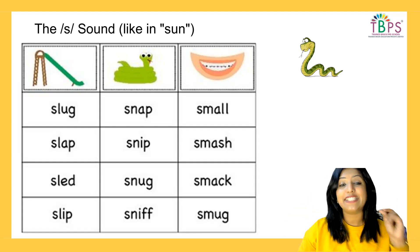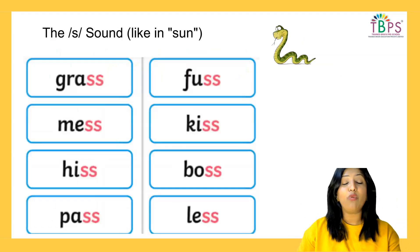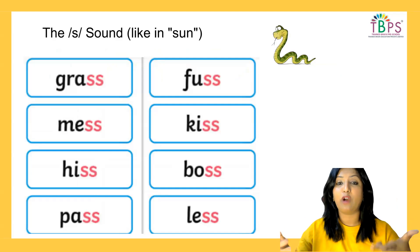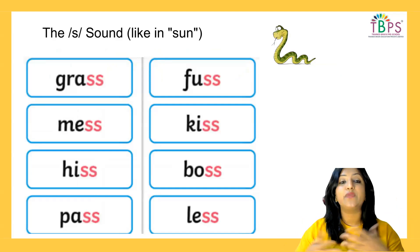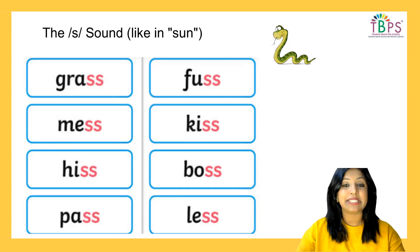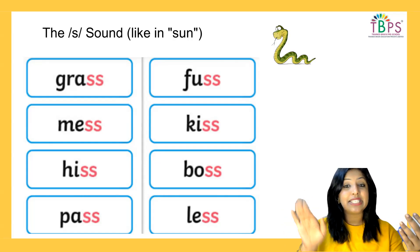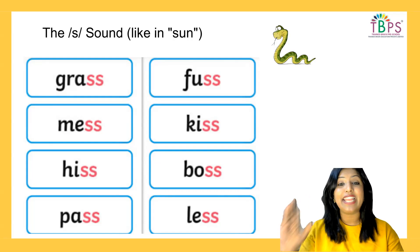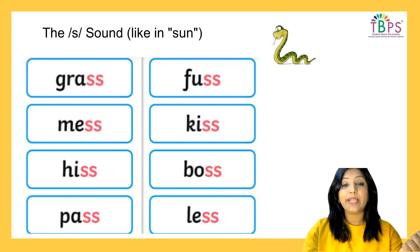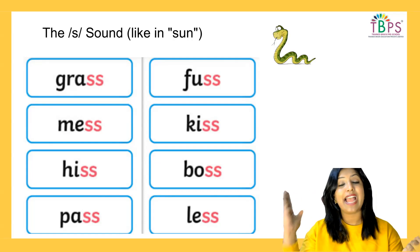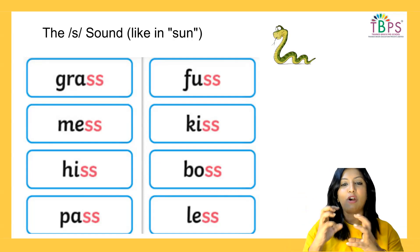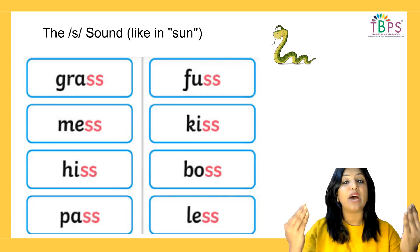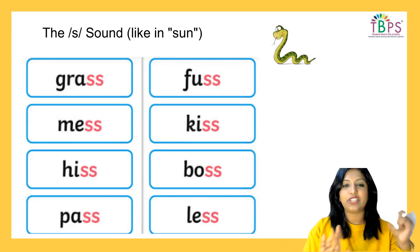Always reinforce these words every day. In case a word has a double consonant, S can also make the /s/ sound, as in words like 'grass,' 'mess,' 'boss,' 'less,' 'pass.' The child will gain phonological awareness that wherever they see S — even a double S together — they sound /s/. Use gestures; this is the key.